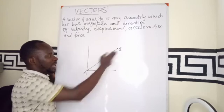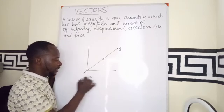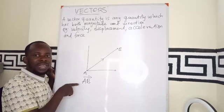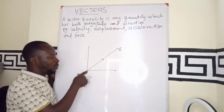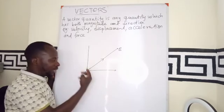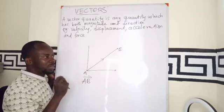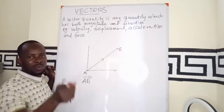A vector can be represented this way, vector AB. Simply put, this has magnitude because we can be able to measure the distance between the two points. We can measure the distance between A and B. Then we can also tell the direction in which we are moving.